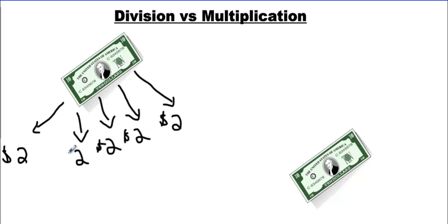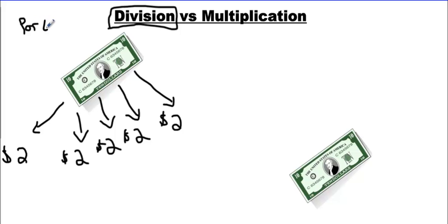So what do we know from this concept? Number one, for a question to be division, there has to be equal sharing. We don't have to use the word sharing — we can use the word portion. If we're dealing with food, we can deal with things like sharing equally. But the idea is that they have to be equal amounts. That's division.